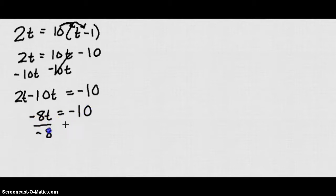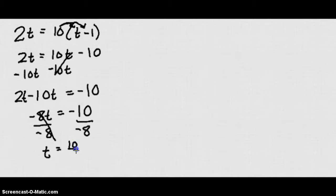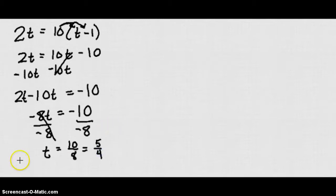Let's divide both sides by negative 8 to get t all by itself. We get t equals positive 10 over 8. If we divide the top and bottom by 2, we get positive 5 over 4 for our final answer. We could also write that as 1 and 1 fourth.